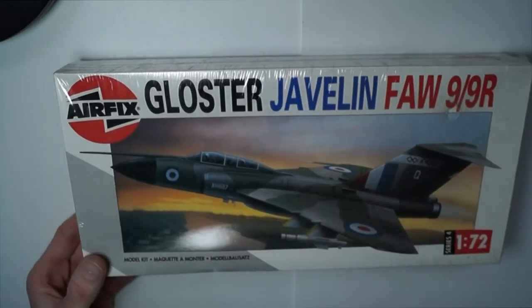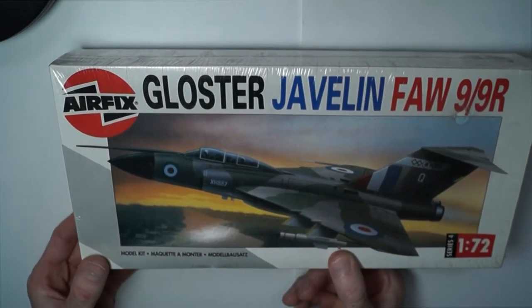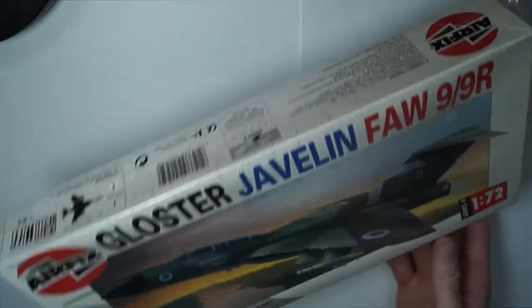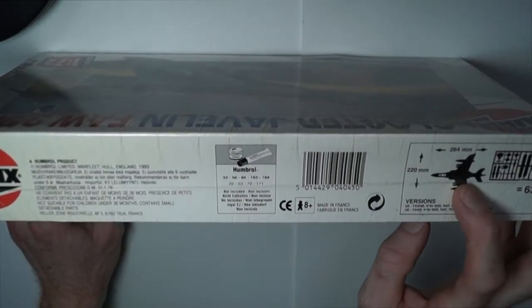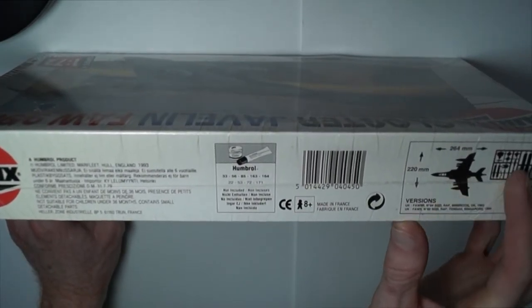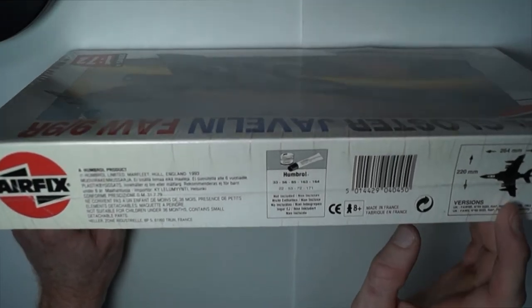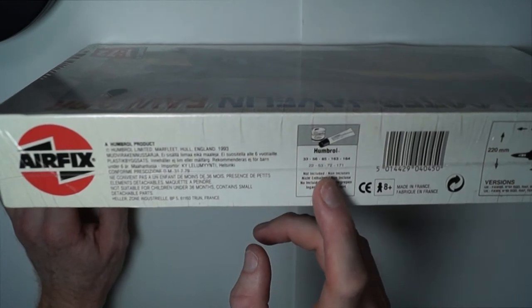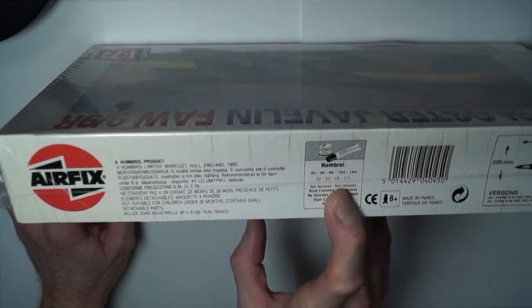On the front is a picture of the Javelin. On the side there is the width and length of the kit, paint suggestions, and colors there by Humbrol.